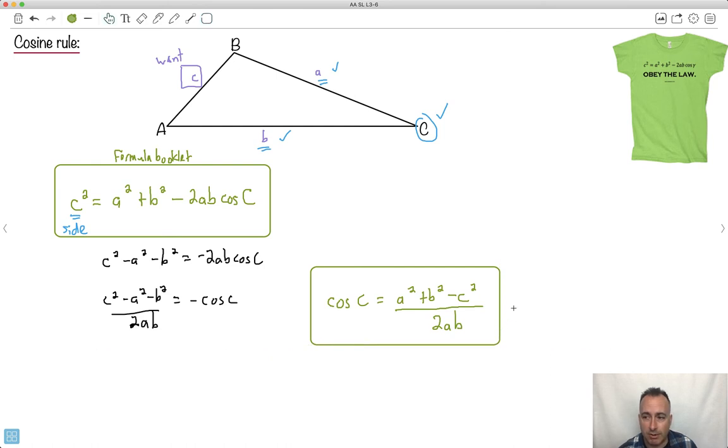So again, you don't have to memorize these. You just have to know that you can find them in your formula booklet. So although these look complicated, at least you don't have to memorize them. It all depends on what you're looking for. In this case, you want an angle. So you're trying to find an angle or a side. Then you have this version or this version.